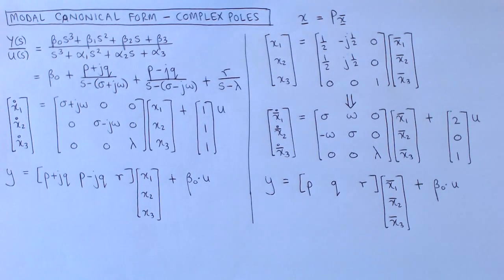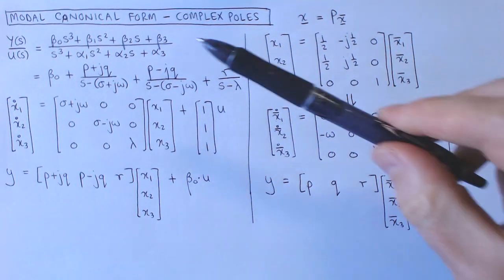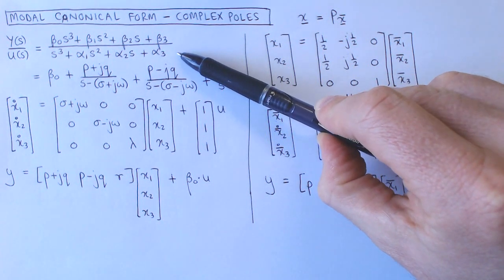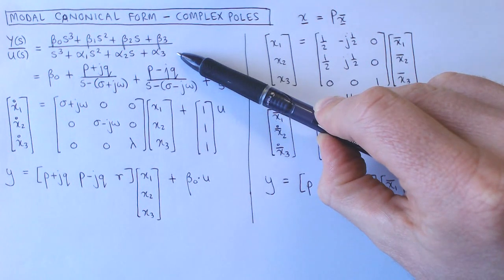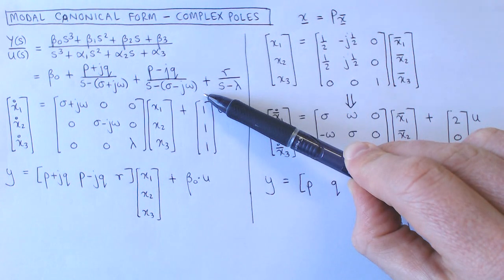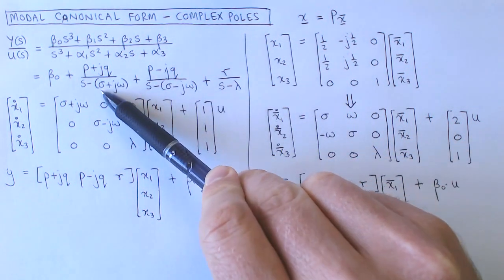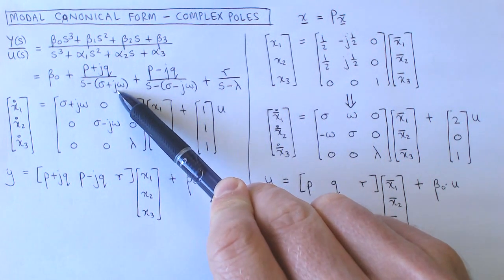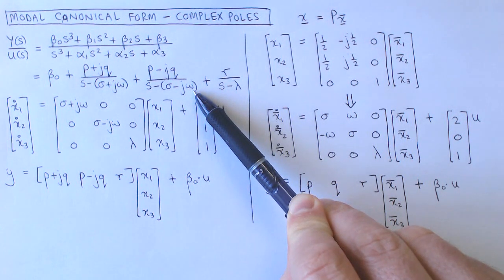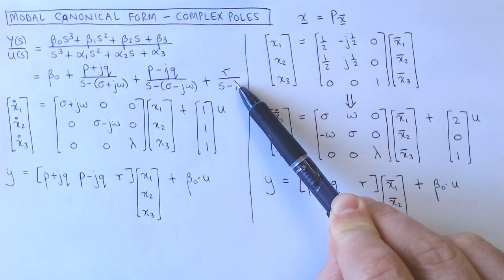Let's first look at the modal canonical form for a system with complex poles. Suppose we have a transfer function of a third-order system, and this system has a complex pole pair and a real pole. It is now possible to use partial fraction expansion to write the transfer function as a sum of three first-order transfer functions. Here, sigma plus j omega and sigma minus j omega are the two complex poles, and lambda is the real pole.